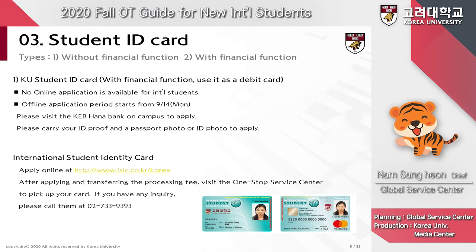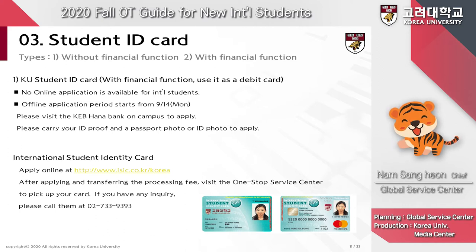If you'd like to apply for a student ID card with financial function, you first need your ARC issued. You can use your student ID card as a debit card in Korea if you add the financial function, and you need to go to KEB Hana Bank, located on our campus, to apply when the semester begins. The international student ID card that you can use outside of Korea is optional and different from Korea University's student ID card. If you'd like to apply for one, you have to do it individually at the link listed on the slide.